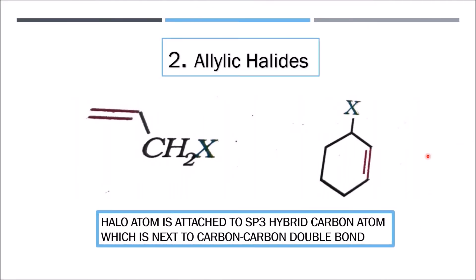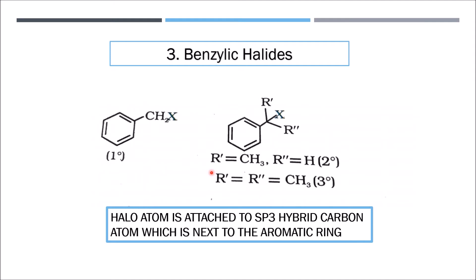The second criteria is allylic halides. In allylic halides, the halo group is attached to an sp3 hybrid carbon, but this carbon is further attached to — or adjacent to — a C=C double bond. Such haloalkanes are called allylic halides.